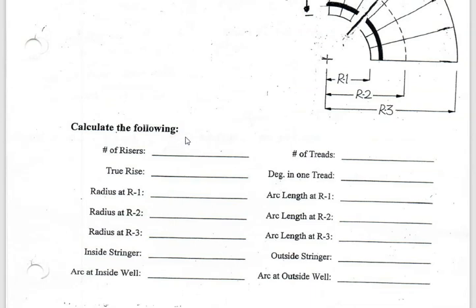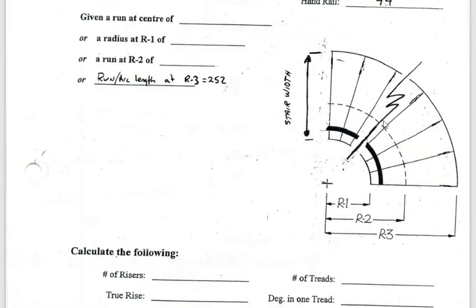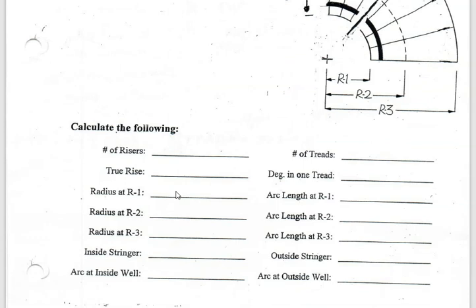The total turn of the stairs is 90 degrees, and the handrail is 44 millimeters wide. On the sheet, what we're looking for is: number of risers, treads, true rise, degree for each tread, and then radius 1, radius 2 — which is to the line of travel. The line of travel has a code requirement of 255mm tread depth, and at R1 it must be 150mm deep.